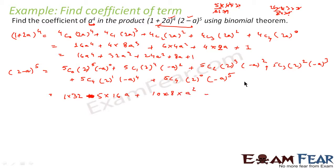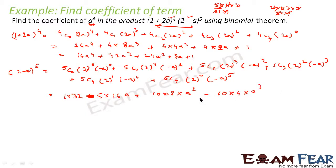Then 5C3 is also 10. 10 × 2² × (−a)³ = 10 × 4 × (−a³) = −40a³.